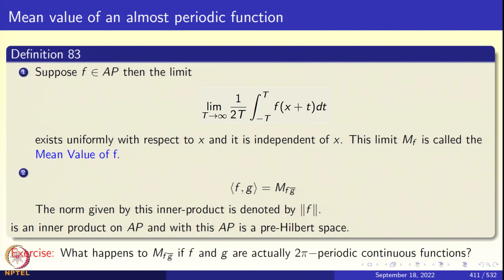Almost periodic functions have a mean value. Now if f and g are almost periodic, their product is almost periodic. The complex conjugate g-bar is also almost periodic. So take the mean value of f times g-bar and define that to be the inner product. Checking the properties of inner product is completely trivial, and this inner product gives rise to a norm — the square root of the bracket f, f. This inner product makes AP, the set of all almost periodic functions, a pre-Hilbert space.